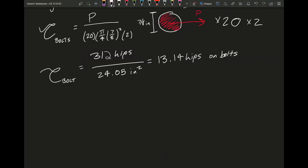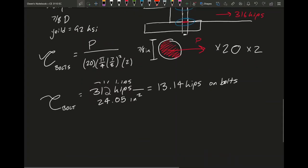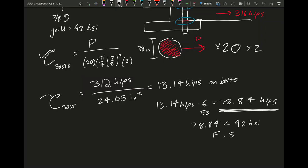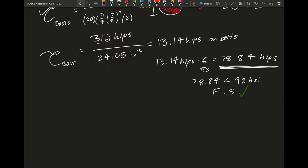For the bolts, we know our yield strength for bolts are about 92 ksi. Let's see what our factor of safety will get us. 13.14 ksi times 6 is equal to 78.84 ksi. This is what we should design for, at least if we want a factor of safety of 6. And as you can see, 78.84 is less than 92 ksi. So our factor of safety is okay, even with the gusset plate not being as thick. But as we know, it wasn't the bolts that failed, it was the gusset plate.